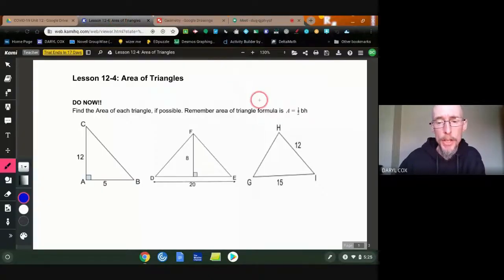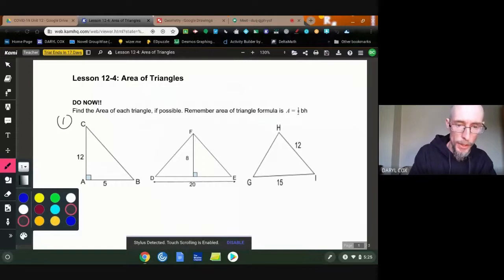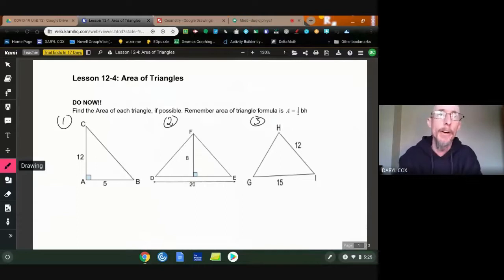In fact, you know what? Just for fun, start out by finding the area of these three triangles. I'll call this triangle number one, triangle number two, and triangle number three. So find the area of them using half the base times height if possible. Go.